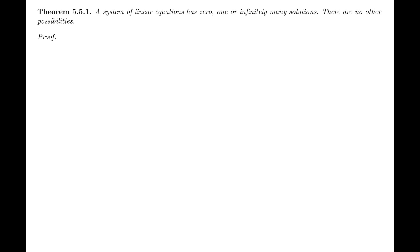Welcome to part 2 of section 5.5. In this video, we're going to prove something that we already know about linear systems. We've been using it, but we haven't proven it formally. It's in the form of theorem 5.5.1, and the theorem says a system of linear equations has zero, one, or infinitely many solutions. There are no other possibilities.